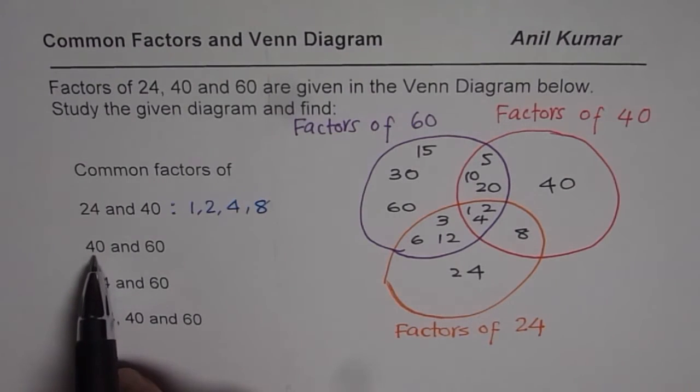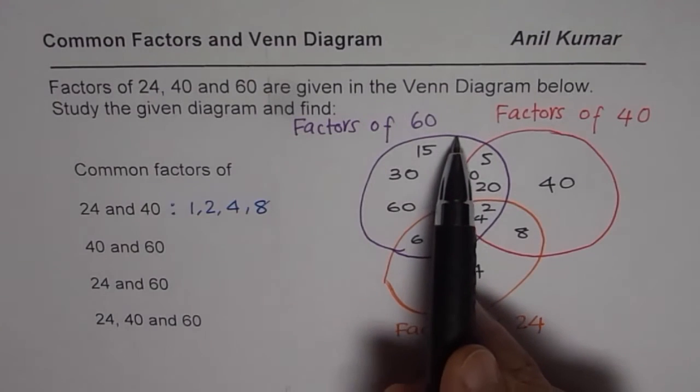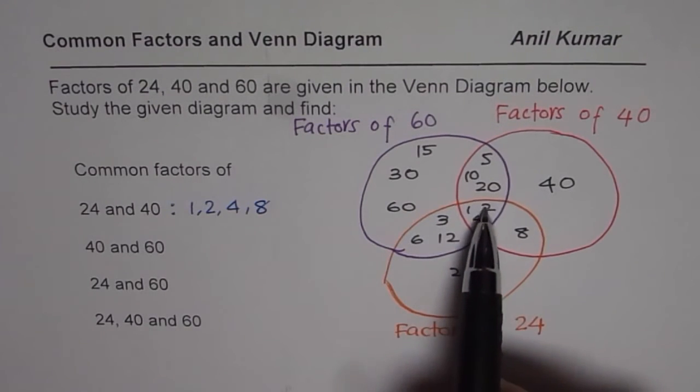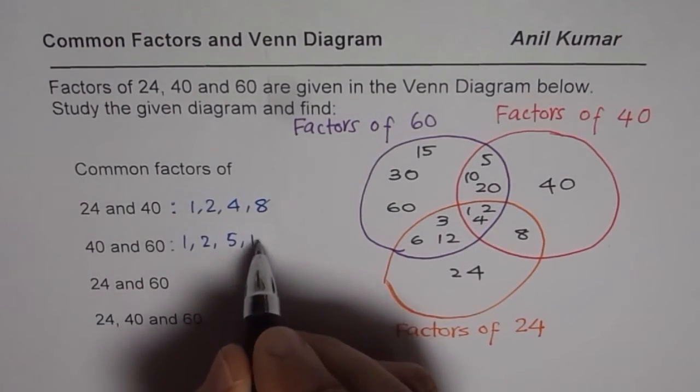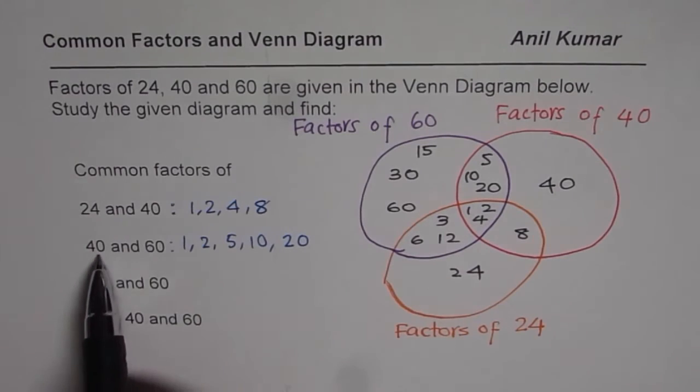Now let us look into common factors of 40 and 60. That means these two groups—the purple circle and the red circle. These are all the common factors: 1, 2, 5, 10, and 20.